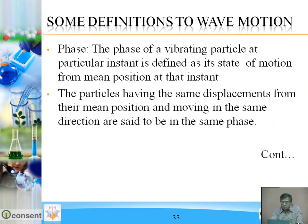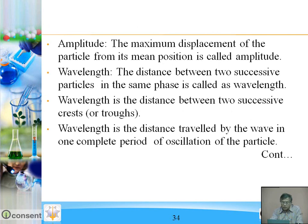Phase. The phase of a vibrating particle at a particular instant is defined as its state of motion from the mean position at that instant. In the previous spring example, when the object moves to the right-hand side from mean position, the distance between the mean position and the direction on the right side gives the description of the phase of that point. Particles having the same displacement from their mean position and moving in the same direction are said to be in the same phase; otherwise they are out of phase.